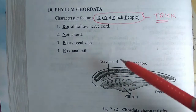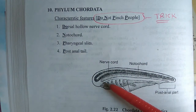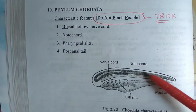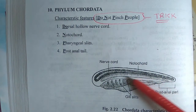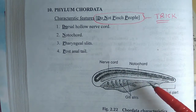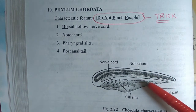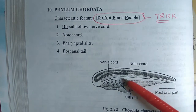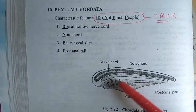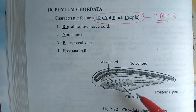This is called the nerve cord. Below the nerve cord, the notochord is present — this structure is called the notochord.